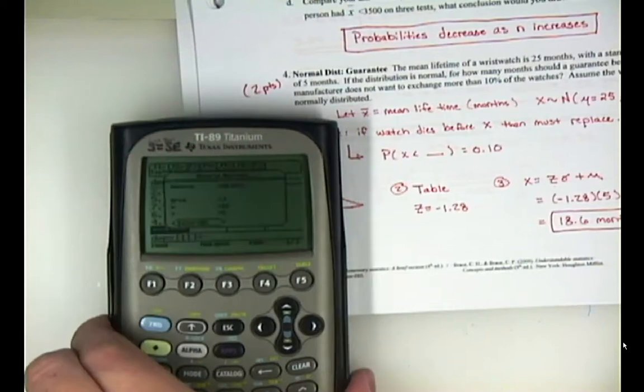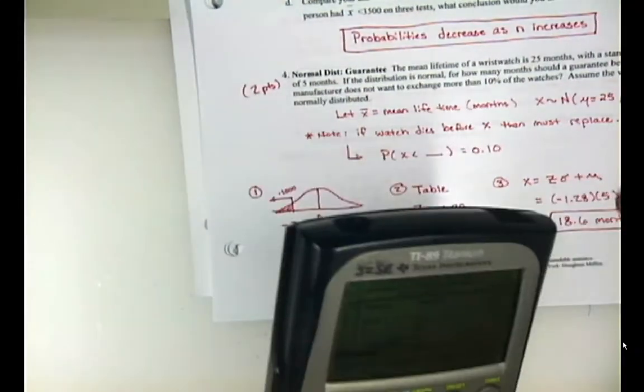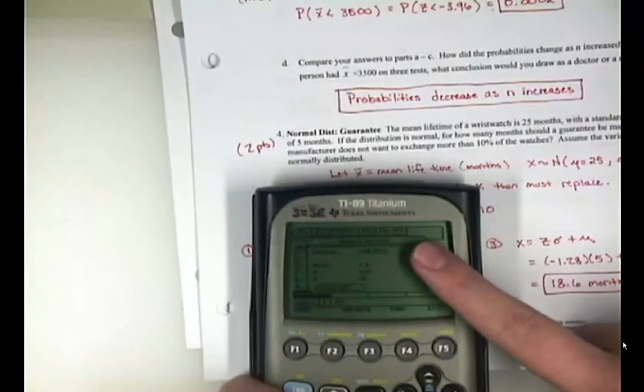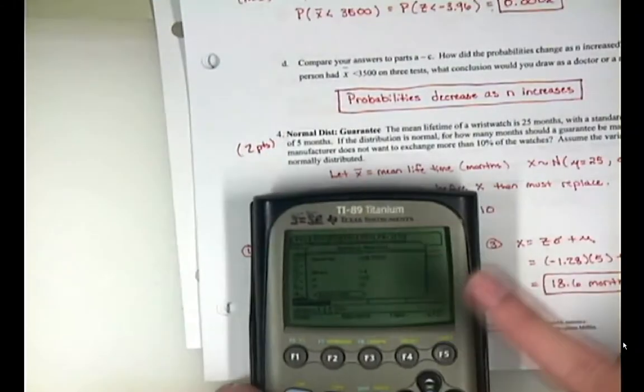and it's going to calculate that raw score for you, which is 18.6 months if you did it by hand. And if you do it with a calculator, it's 18.5922. So, bam, right there,